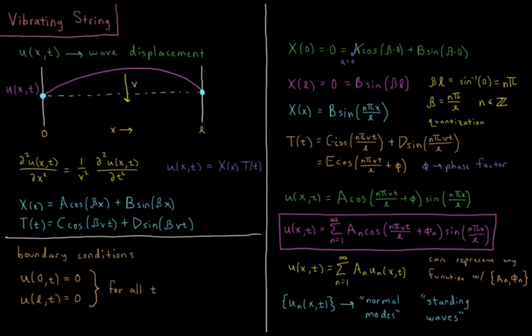These constants C and D will determine the relative magnitudes of sine and cosine, but we can fix that by saying that this is equal to a different constant times cosine of n pi v t over L plus phi, which is some phase factor, some angle, which is determined by the relative ratios of C and D.